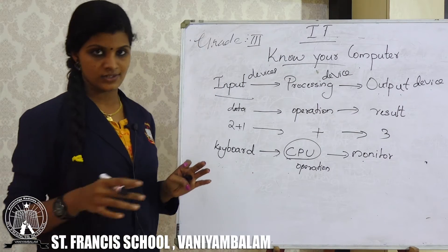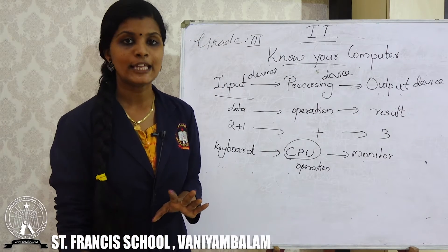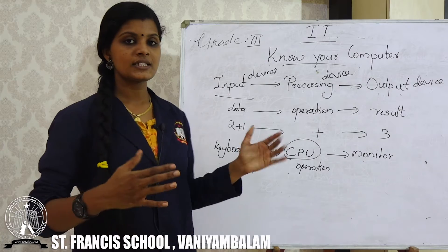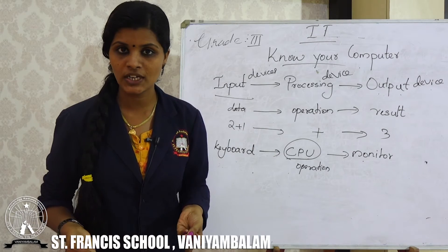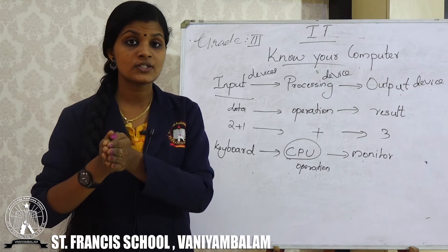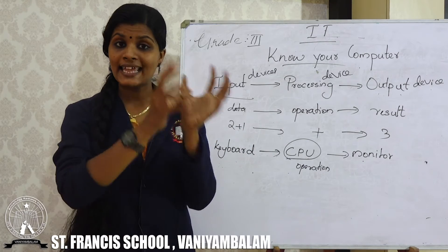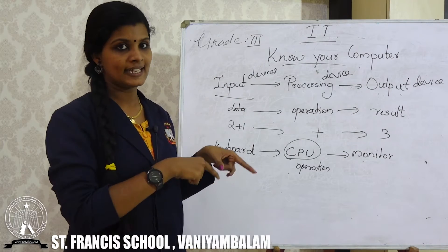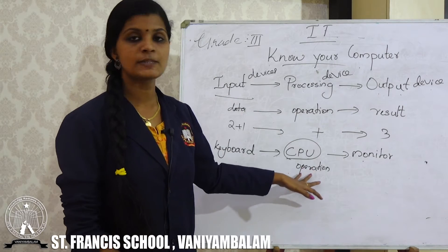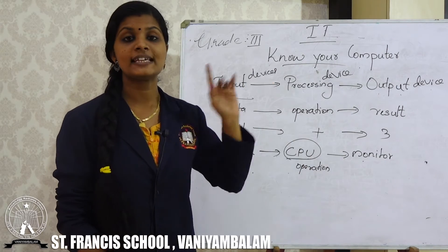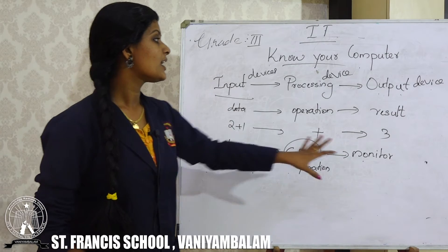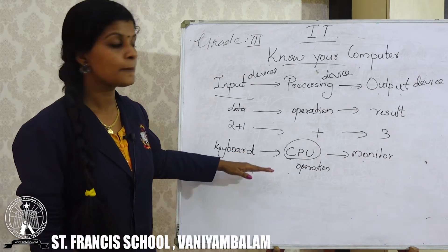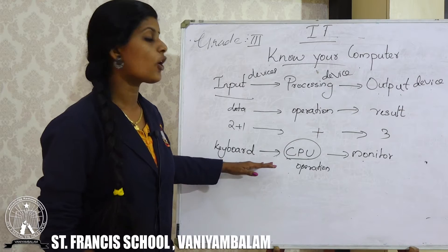I hope all of you understood now. The three steps: input, processing and output. First of all, we will enter some data or instruction. Then the second step — an operation is performed on that data. And after the operation is performed, we will get a result, that is the output. These are the three steps involved in the working of a computer.